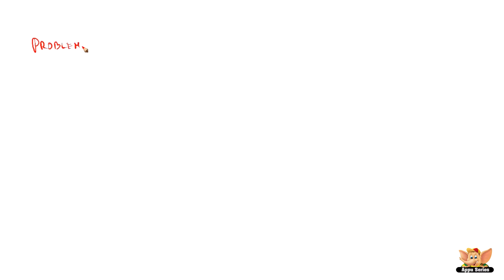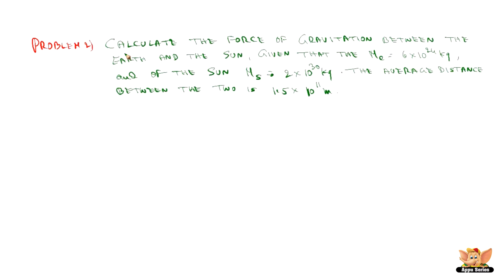Let's see problem 2. Calculate the force of gravitation between the earth and the sun, given that the mass of earth is 6×10²⁴ kg and of the sun is 2×10³⁰ kg. The average distance between the two is 1.5×10¹¹ meters.